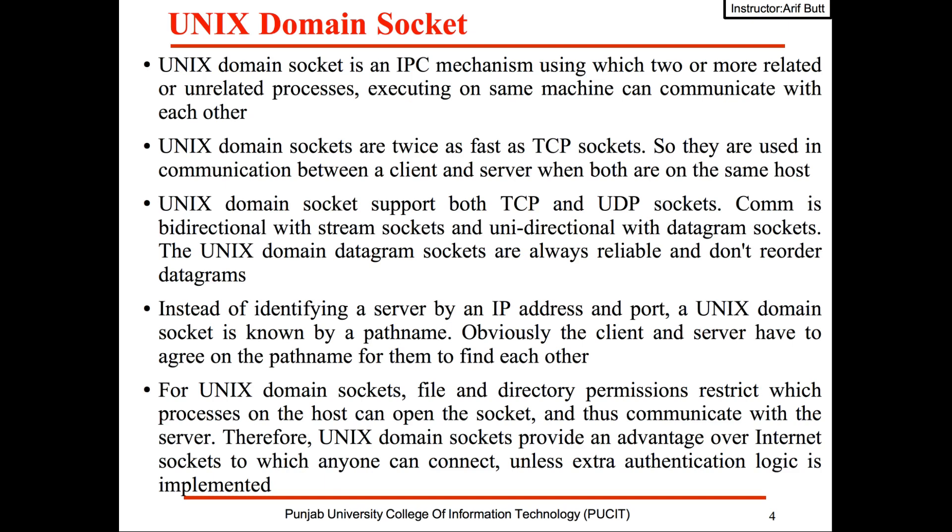Unix domain socket is an IPC mechanism using which two or more related or unrelated processes executing on the same machine can communicate with each other. Unix domain sockets are twice as fast as the internet domain TCP sockets, so they are used in communication between a client and server when both are on the same host.